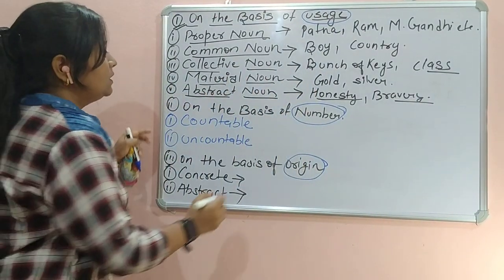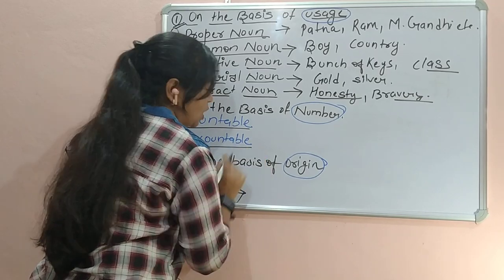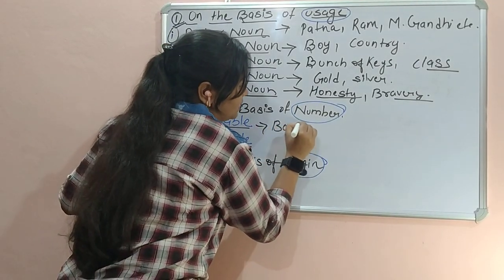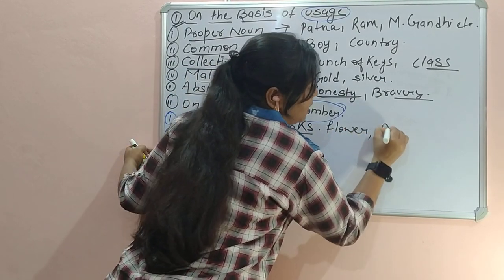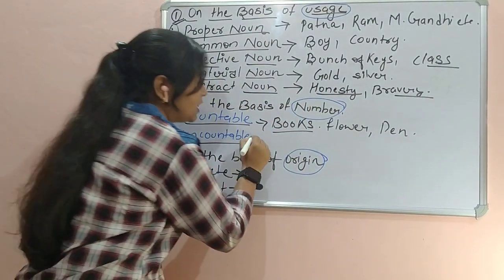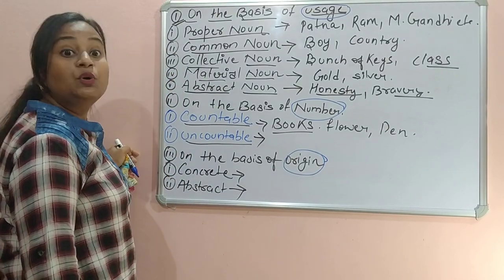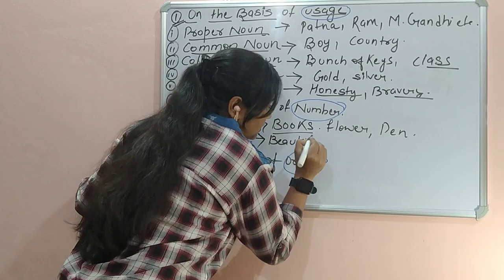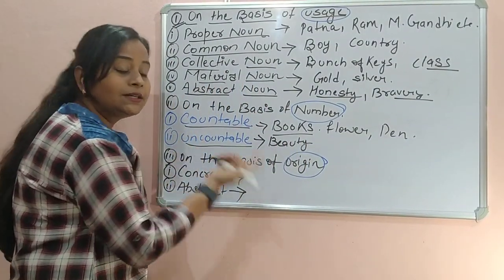Then countable noun — countable noun is a noun which can be counted, like books, flower, pen. So it is called countable noun. Uncountable noun is a noun which can't be counted, like beauty. Can beauty be counted? No. So it is an uncountable noun.